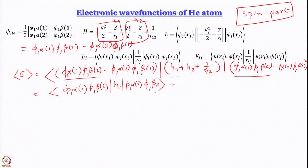Remember, this integral is really not a single integral. What are the parameters here? There has to be dr₁, there has to be dr₂, and there has to be ds for spin also. So it is actually a triple integral. In principle I should be able to separate it out into a product of maybe three integrals. First of all I can take the spin part out — this is really an integral over dr₁, dr₂, and ds.